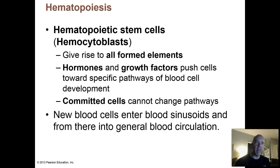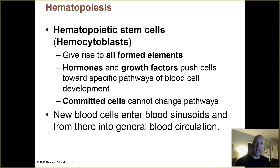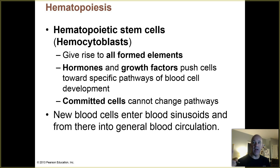So how does hematopoiesis occur? Believe it or not, in your red bone marrow, all of these different types of blood cells — the red blood cells, your white blood cells, and your platelets — they all are derived from the same type of stem cell.